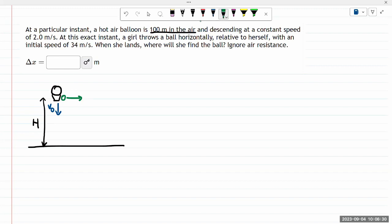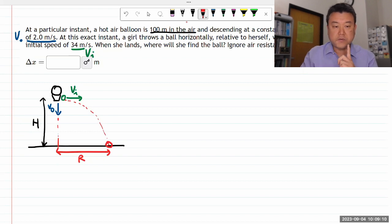And I know I'm sketching it slightly wrong. I'll correct that in a bit. Let me label this VI for V initial relative to herself with an initial speed of. So this is my VI. And let me just label this as my V naught. When she lands, where will she find the ball? So what we are looking for is that this ball that's been launched, it's going to undergo projectile motion and land somewhere. And you are looking for this range of the ball dropping, the horizontal distance from where the balloon and the girl was.